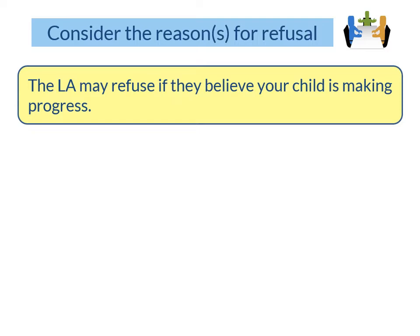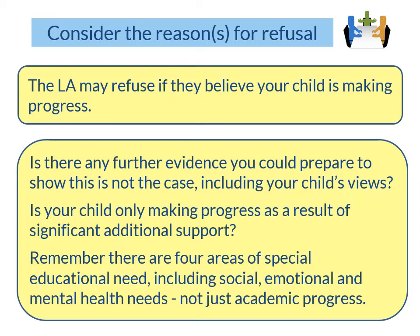The LA might refuse if they believe that your child is making progress. If you disagree, consider whether there is further evidence to show this is not the case, including your child's views. Is your child only making progress as a result of significant additional support? Remember there are four areas of special educational need, including social, emotional and mental health needs. Your child may be making academic progress but there has been a real decline in their mental health or ability to communicate and interact with their peers — consider what you could prepare to demonstrate this.